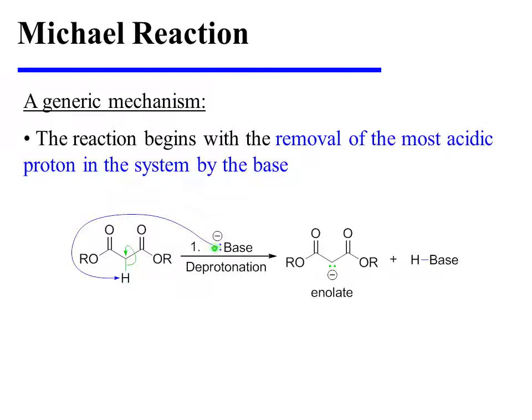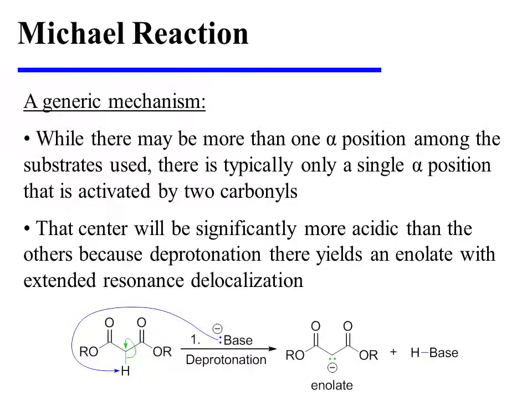The reaction begins with the removal of the most acidic proton in the system by the base. The most acidic proton is bound to the position alpha to two carbonyls. While there may be more than one alpha position among the substrates used, there is typically only a single alpha position activated by two carbonyls, and that center will be significantly more acidic than the others because deprotonation there yields an enolate with extended resonance delocalization.